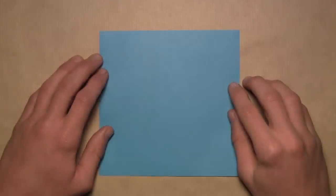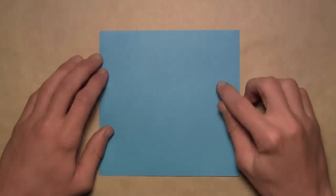In order to fold your preliminary base, you'll need one square sheet of paper. If this is your first time, I recommend using a six inch or larger square with color on one side and white on the other. Once you've prepared your paper, we're going to start with our square with the colored side up.